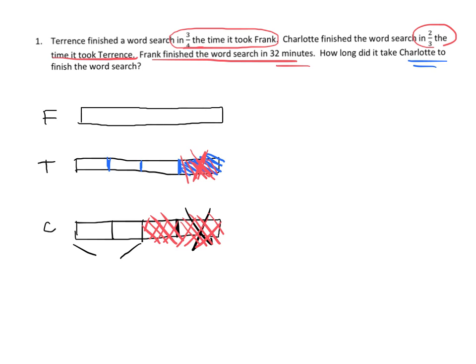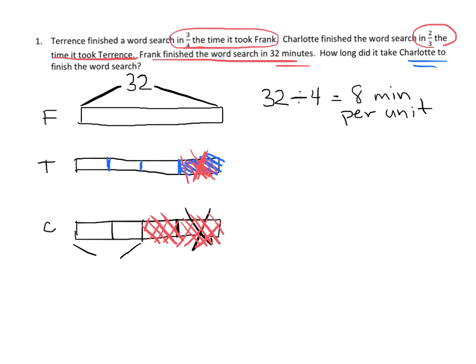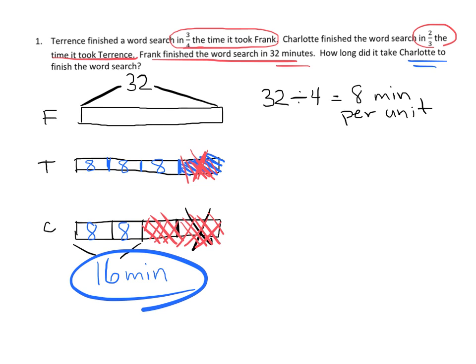Frank's tape diagram is 32 minutes total. Dividing 32 by four gives us 8 minutes per unit. Each one of these small units counts as 8 minutes. So Charlotte's two units equal 16 minutes — that's the answer! The only math we had to do was divide by four.